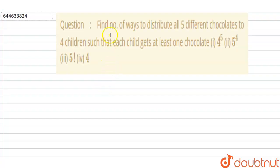Hello everyone, let's look at the following question. The question says find number of ways to distribute all five different chocolates to four children such that each child gets at least one chocolate.